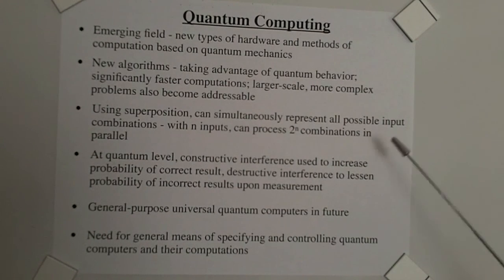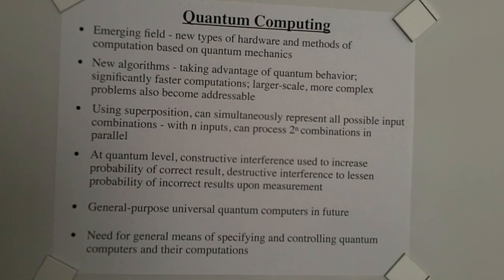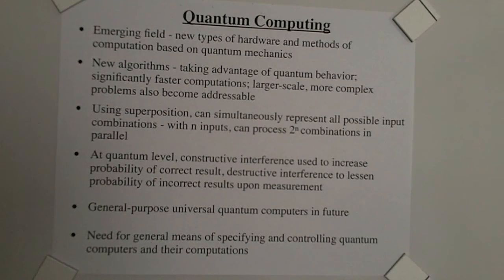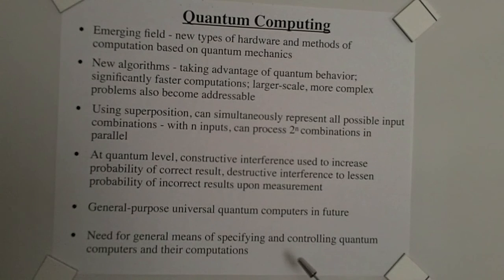Using superposition, one can simultaneously represent all possible input combinations. So with n inputs, one can process 2^n combinations in parallel. At the quantum level, constructive interference is used to increase the probability of a correct result, and destructive interference is used to lessen the probability of incorrect results upon measurement. General-purpose universal quantum computers are coming in the future. Thus, there is a need for a general means of specifying and controlling quantum computers in their computations. I designed Quasi to meet this need.